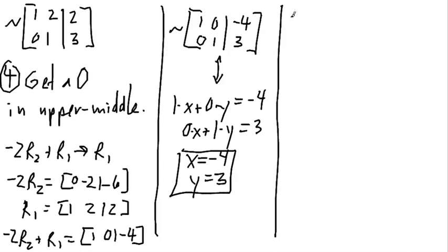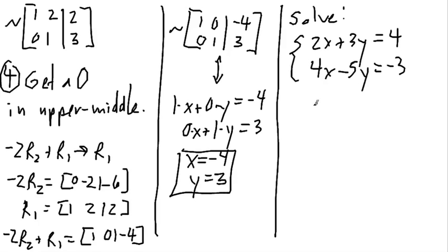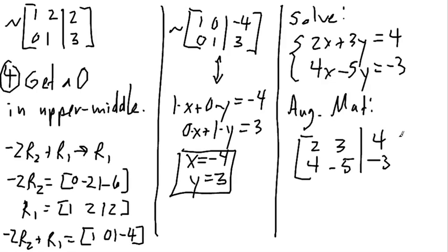Okay, let's look at one more example of this sort of thing. Let's solve the following system: 2x plus 3y is equal to 4, and 4x minus 5y is equal to negative 3. So the corresponding augmented matrix here is 2, 3, 4, negative 5, and on the right side, we have 4 and negative 3. And again, the first thing we want to do is to get the 1 in the upper left.